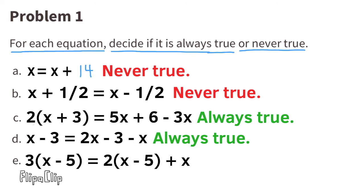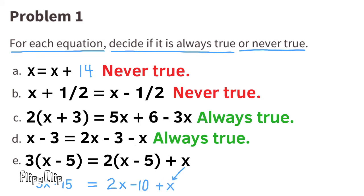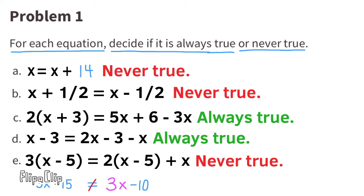E: 3 times X minus 5 equals 2 times X minus 5 plus X. Use the distributive property: 3 times X is 3X, and 3 times negative 5 is negative 15. Then 2 times X is 2X, and 2 times negative 5 is negative 10. Bring down the plus X and collect like terms: 2X plus 1X equals 3X. So 3X minus 15 does not equal 3X minus 10, and that is never true.